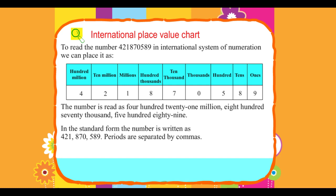In the standard form, the number is written as 421,870,589. Periods are separated by commas.